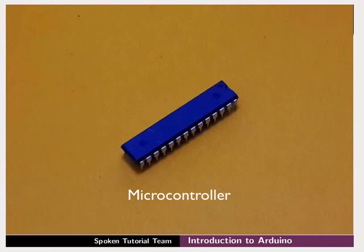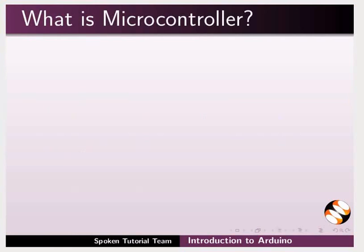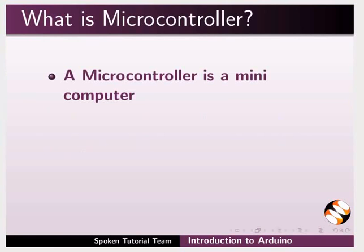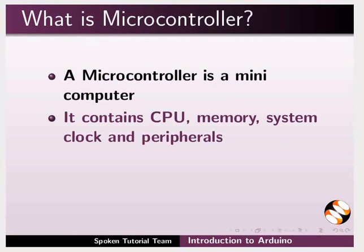This is the microcontroller. It can be found in many electronic devices, from portable music devices to washing machines and cars. A microcontroller is a mini computer. It contains a CPU — that is the central processing unit — memory, system clock, and peripherals.